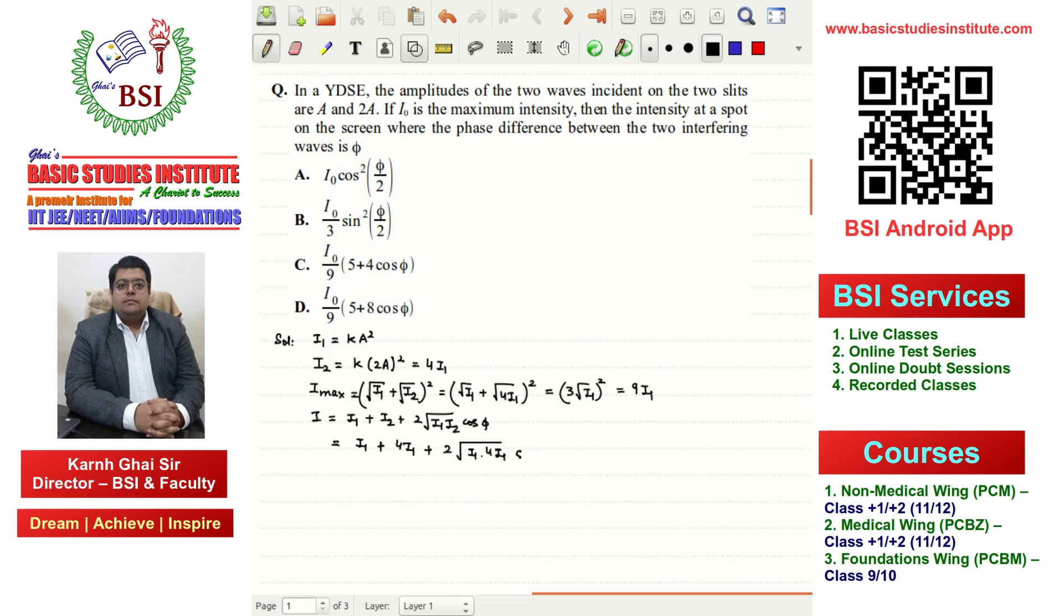Further solving: 5I1 + 2·2I1·cos(φ), which gives us 5I1 + 4I1·cos(φ). Factoring out I1, we have I1(5 + 4cos(φ)).